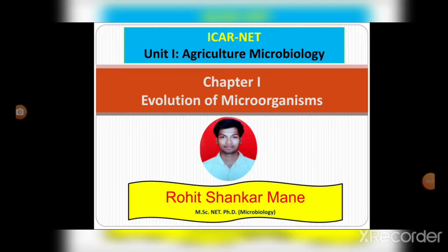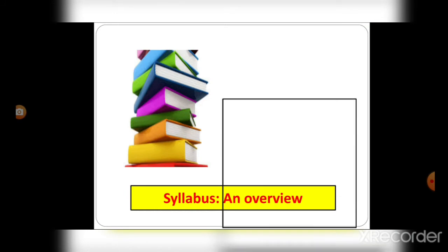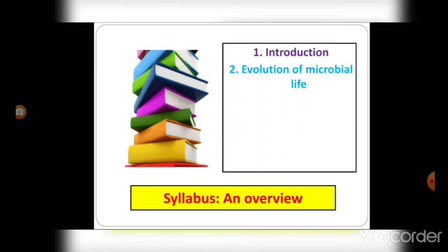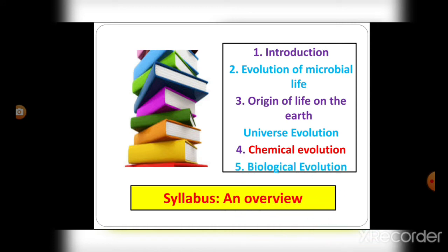Hello everyone, this is Rohit Shankar Mani and welcome to Scientist Academy. Today we are going to learn about evolution of microorganisms. We know that Earth was created millions of years ago, and we are curious about microbial life and their origin with respect to universe evolution, chemical evolution, biological evolution, and cognogeny.